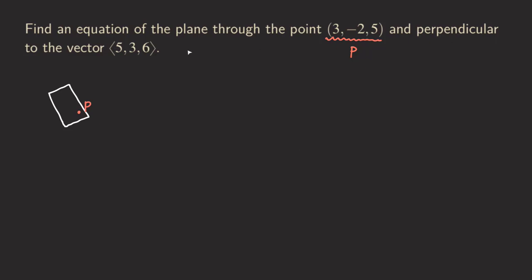And then now it says that the plane is perpendicular to this vector. So this vector here is perpendicular to the plane. So we have ⟨5, 3, 6⟩.